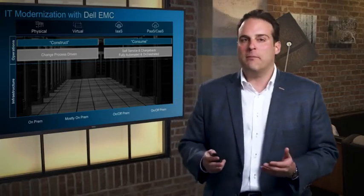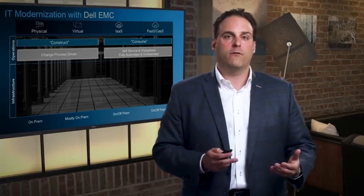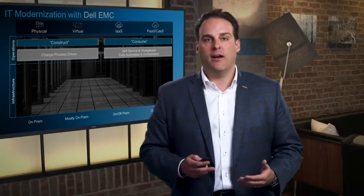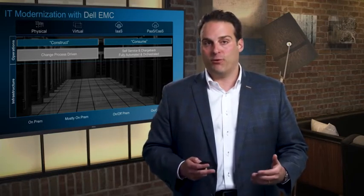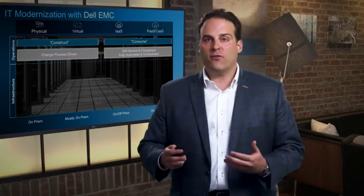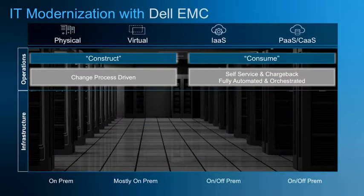But this isn't all about just the workloads. Some of it has to do with the people and the process, or the operating model. Those physical and virtual worlds were constructed and built, ultimately leveraging a change-process-driven approach, with people and procedures built for those physical and virtualized workloads. But as you move to infrastructure, platform, container, and cloud as a service, the operating models are different. They're really built for consumption — for self-service, chargeback, automation, and orchestration — but they require a different set of people, process requirements, and skill sets.